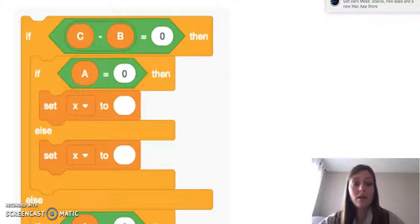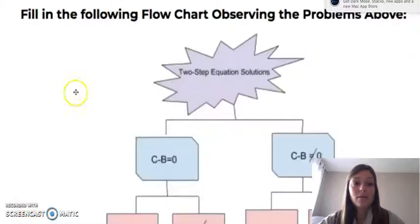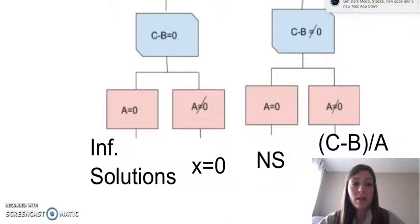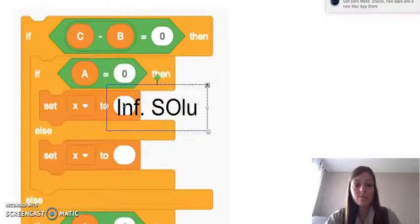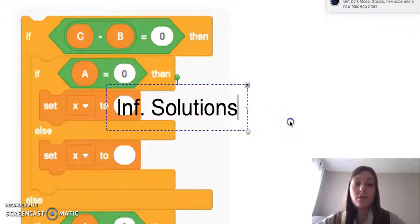So if we look at the code now, and we come back to our flowchart, that we had if C minus B equals zero, and we can follow down, and A equals zero. In this situation, we said we had infinite number of solutions. So that piece would come right in here. So X has infinitely many solutions.